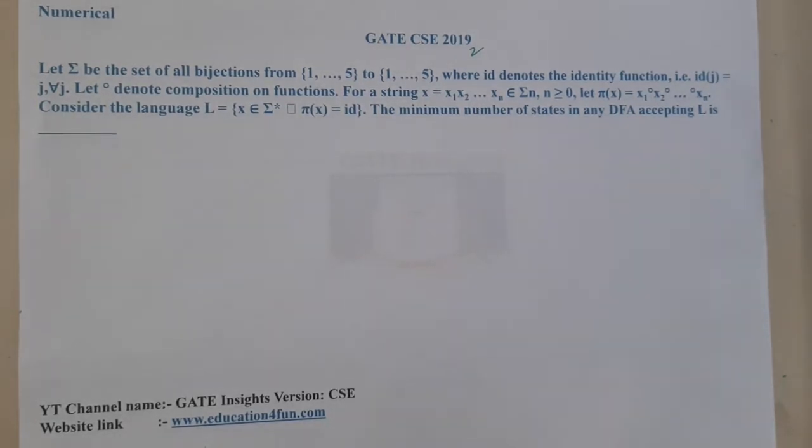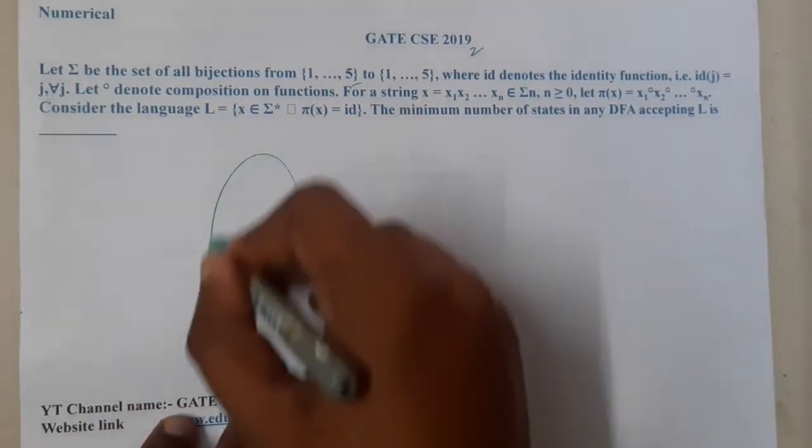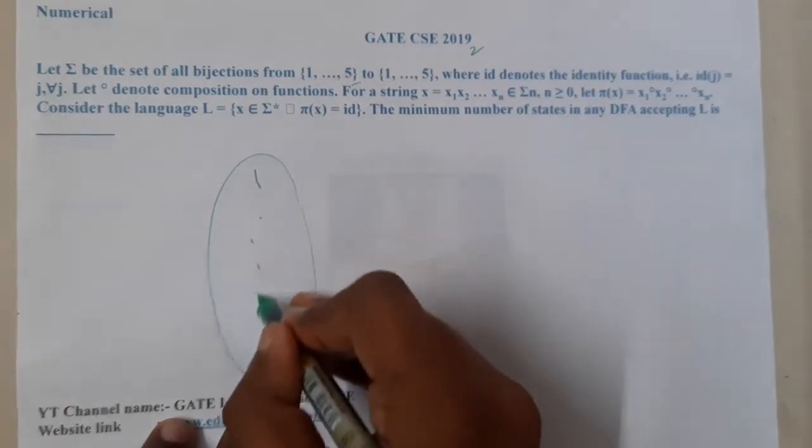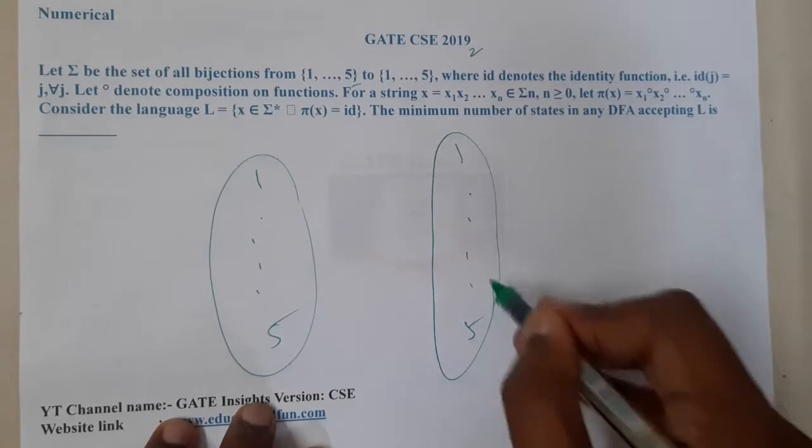The given question is: let sigma be the set of all bijections from {1,...,5} to {1,...,5}. They are saying one to five and one to five. I think this question is also a combination of discrete mathematics.